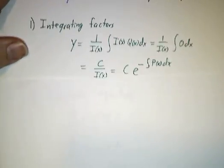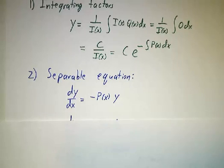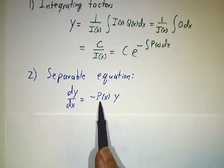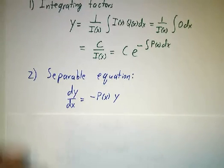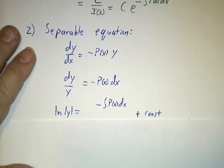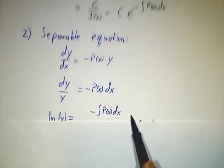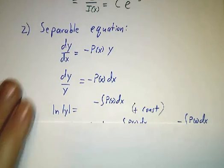But we actually know a different way to solve this equation. It's separable. You can write it as dy dx is minus p times y. So dy over y is minus p dx. Natural log of y is minus the integral of p dx. And there you have your constant built into that integral.